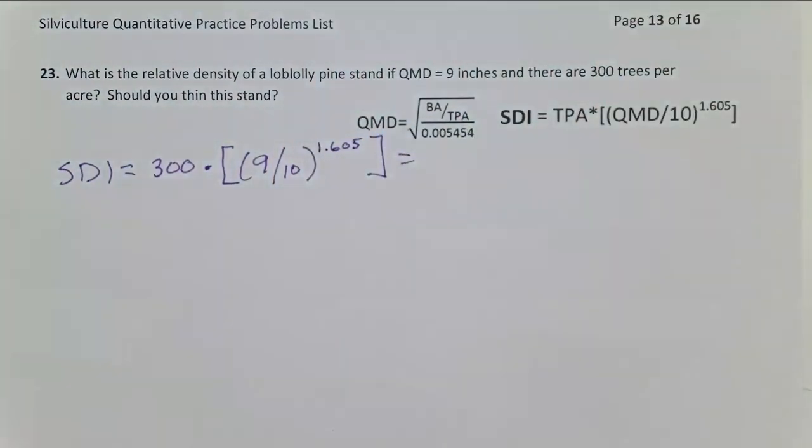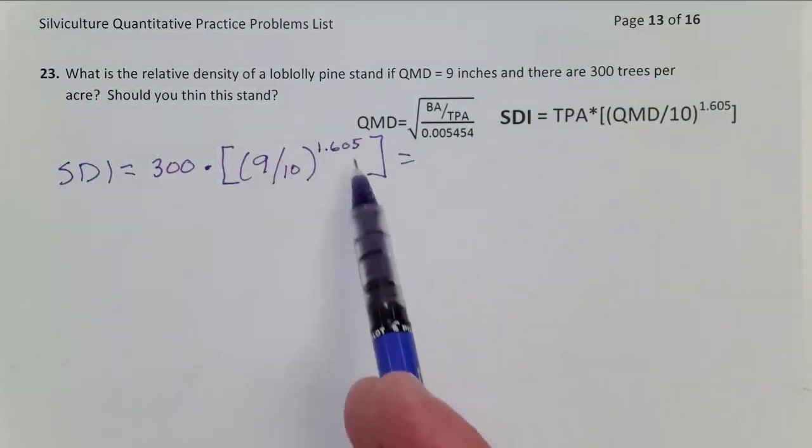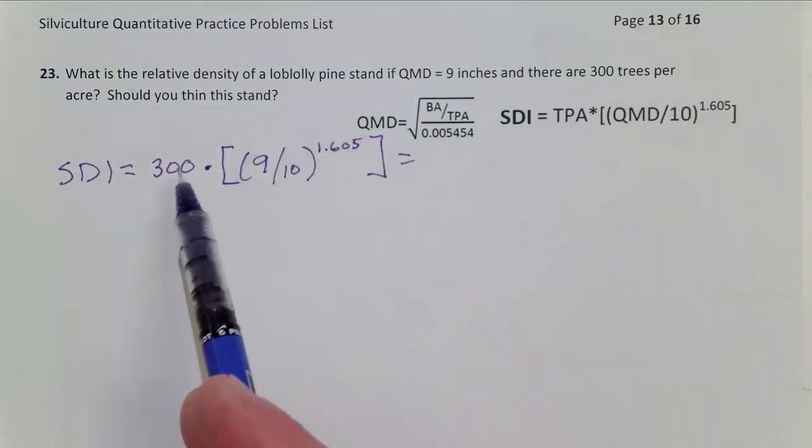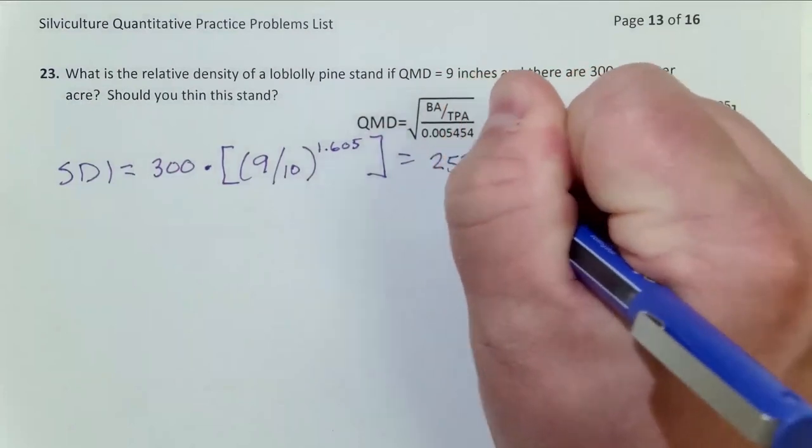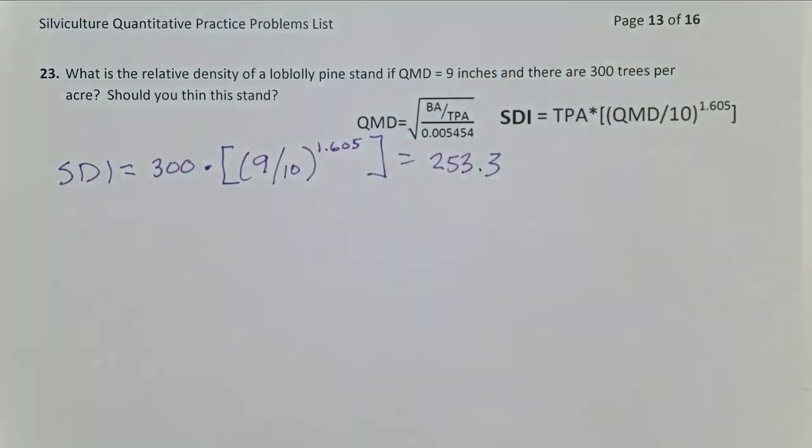Let's talk order of operations. In your calculator, divide 9 by 10, get 0.9. Take 0.9, raise it to 1.605, get that number. Once you have that number, then multiply it by 300, and that'll give you the correct answer here, which is going to be 253.3 10-inch trees per acre.